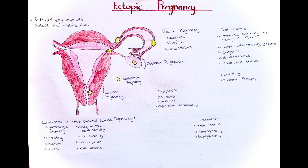The next type is the interstitial pregnancy, which occurs within the interstitial portion of the fallopian tube — the segment that connects the tube to the endometrial cavity. Other types include the abdominal, ovarian, or cervical ectopic pregnancy, which are very rare and together make up around 1% of ectopic pregnancies.